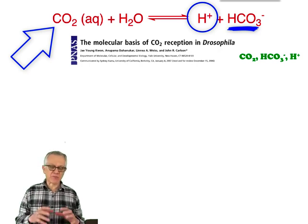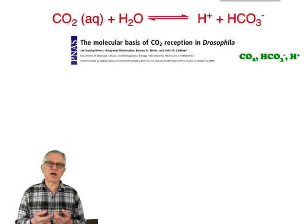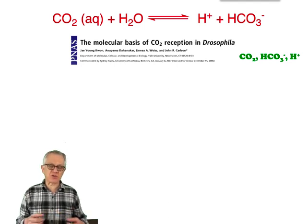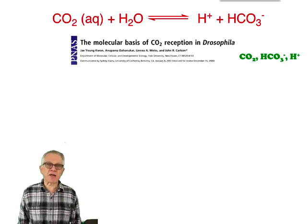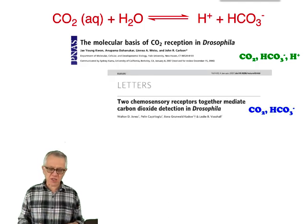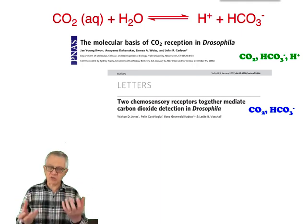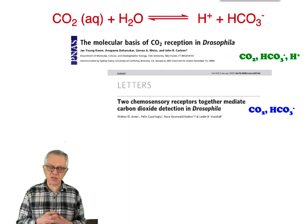In 2007, the group from John Carlson published a paper in PNAS where they showed that in Drosophila, two GRs — GR21A and GR63A — act as the receptor for carbon dioxide. They asked whether these receptors respond to CO2 itself, to bicarbonate, or to protons. That same year, using a different approach, Les Vosshall's lab also published a paper in Nature, showing that those two receptors from Drosophila, GR21A and GR63A, are the necessary components.